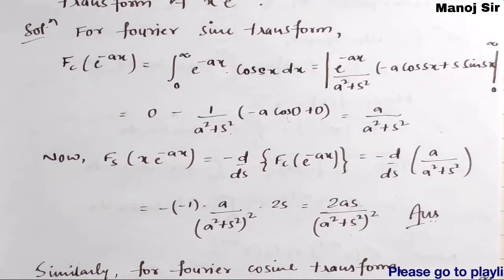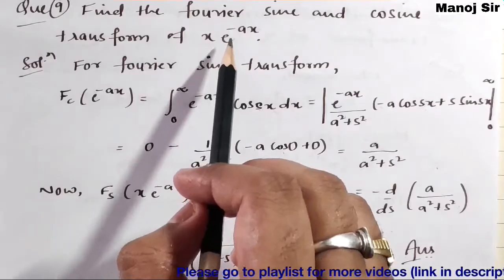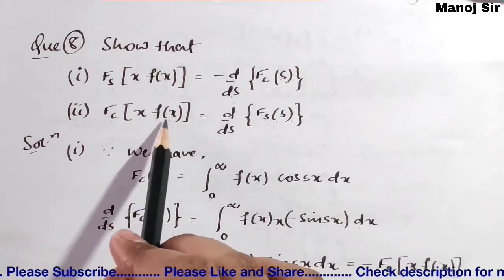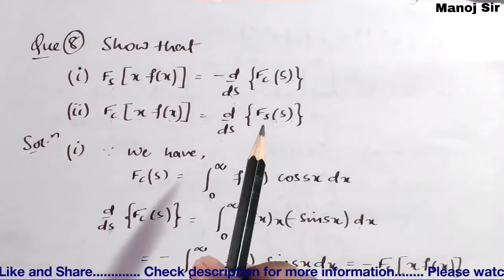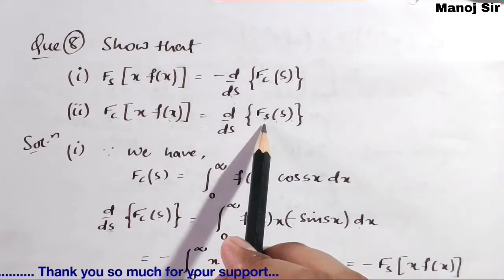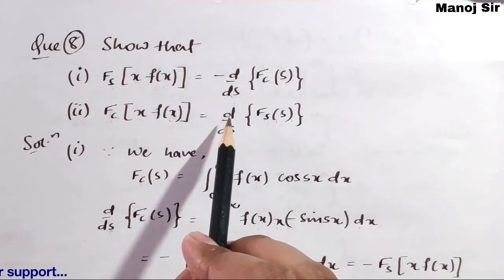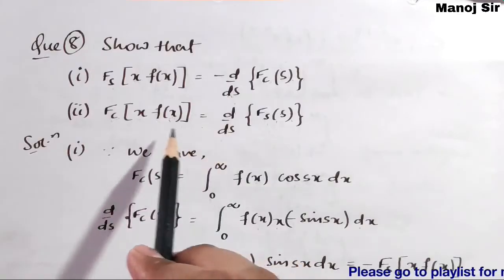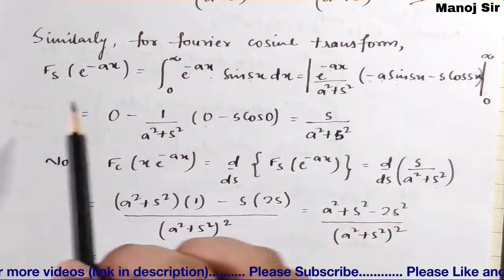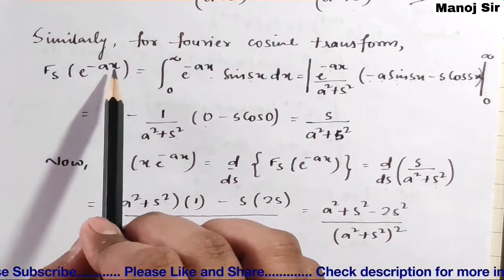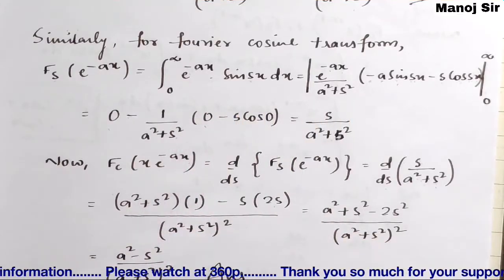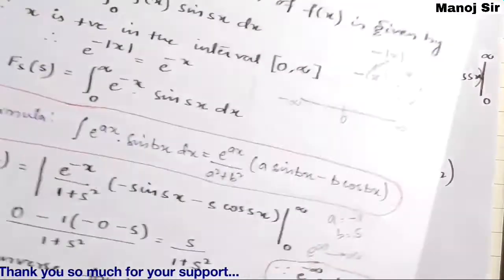Now we need to find the Fourier cosine transform of x·e^(-ax). If we want the Fourier cosine transform of x·f(x), where f(x) = e^(-ax), we first find the Fourier sine transform of f(x) = e^(-ax), then differentiate with respect to s — that gives the Fourier cosine transform of x·f(x). So we compute the Fourier sine transform of e^(-ax) = integral from 0 to infinity of e^(-ax)·sin(sx) dx.